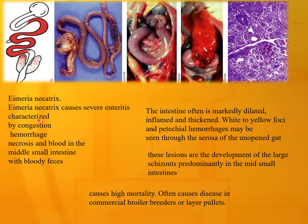Eimeria necatrix causes severe enteritis characterized by congestion, hemorrhage, fibrosis, and blood in the mid-small intestine. The intestine is markedly dilated, inflamed, thickened, with white to yellow foci, and petechial hemorrhage visible through the serosa of an open gut. These lesions result from development of large schizonts predominantly in the mid-small intestine. It causes high mortality and often causes disease in commercial broiler, breeder, or layer flocks.